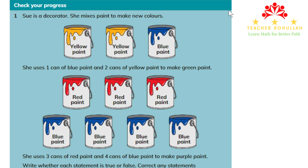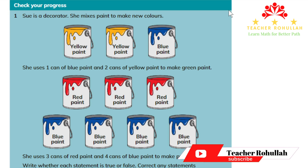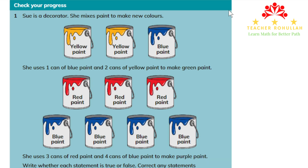Hello, and welcome to our today's lesson. In this lesson, we are going to work on the last part of Unit 13 of Cambridge Primary Mathematics Learners Book 5. This part is aimed to check students' understanding of the whole lesson that they studied through the unit. This unit is covering ratio and proportion.